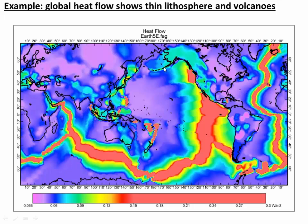Here are the active volcanoes of the Aleutian Islands too. So we see the crustal spreading and thinning and the volcanoes. And then under the continents, like under the eastern US, any place where we've got a stable continent that's just been sitting there for a long time, the crust is very thick and the heat flow is very very low. So most of our continents have low heat flow.